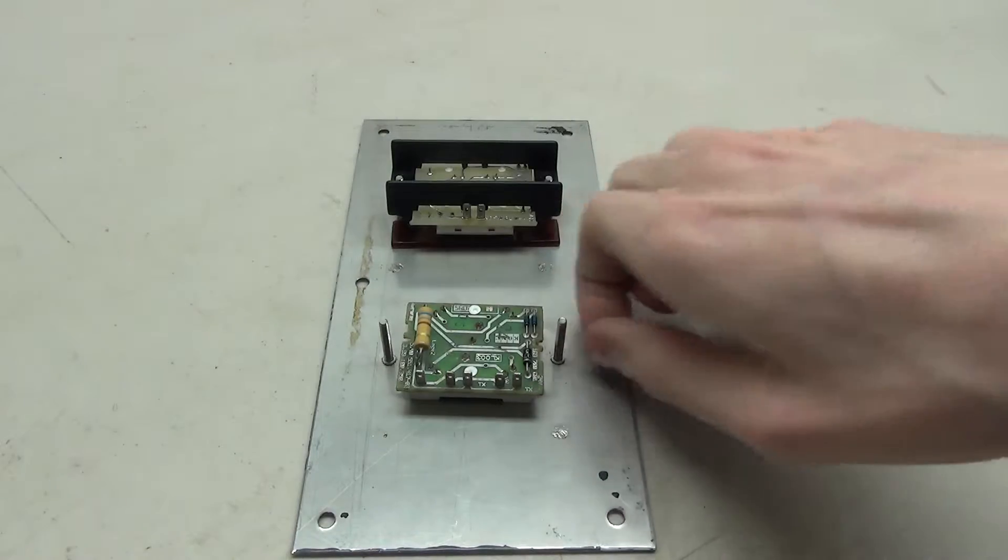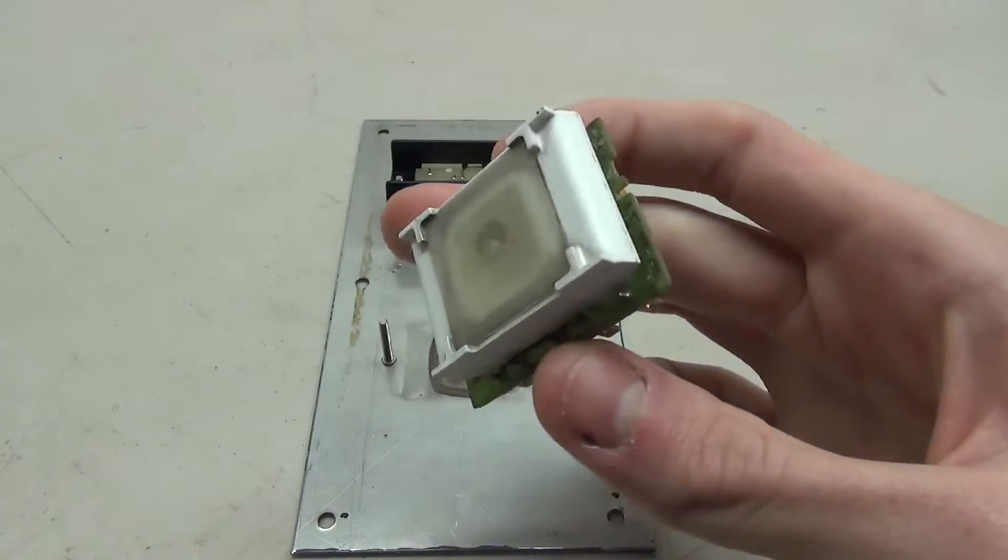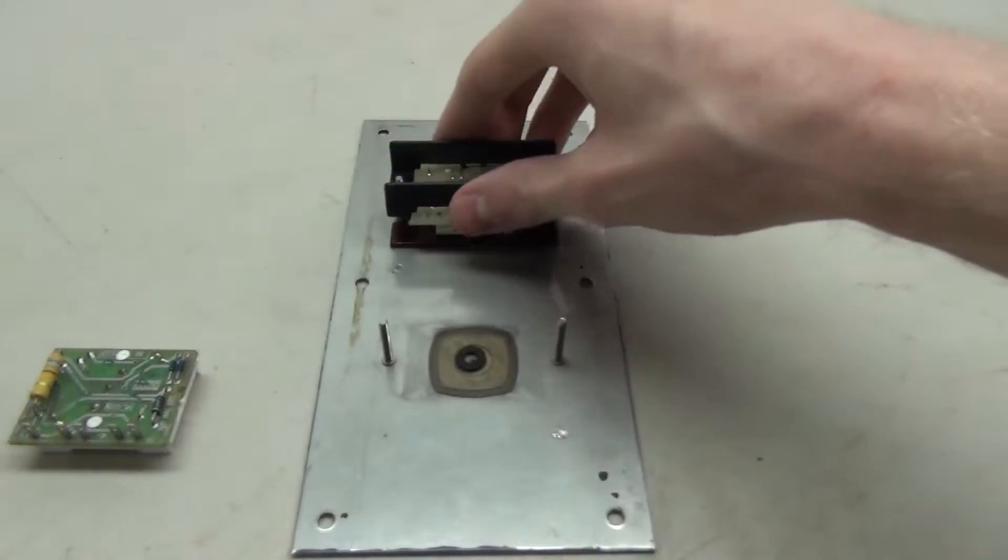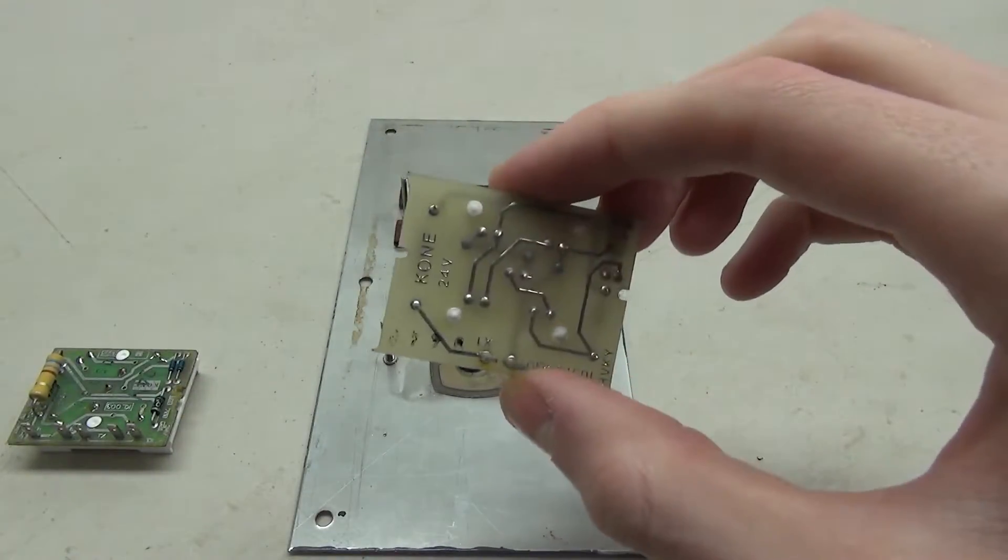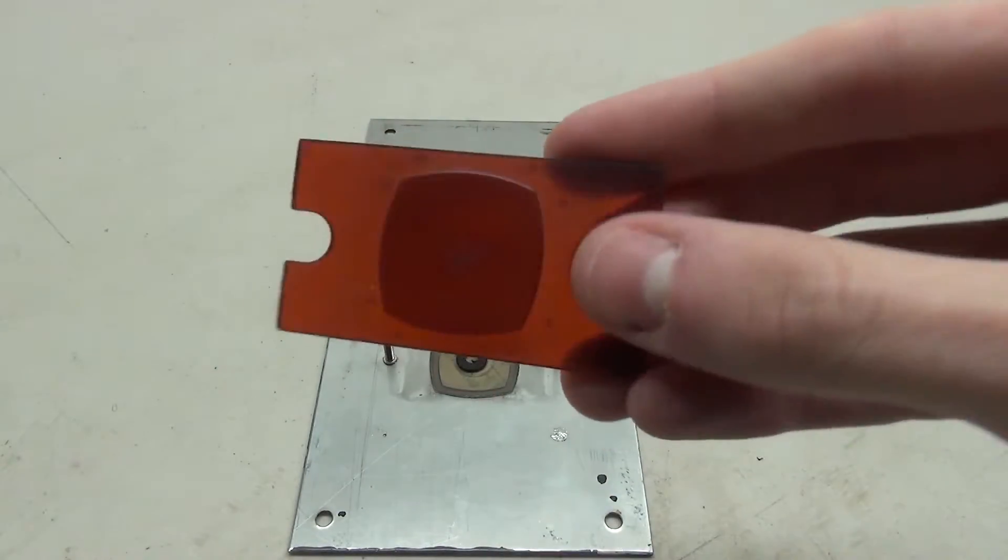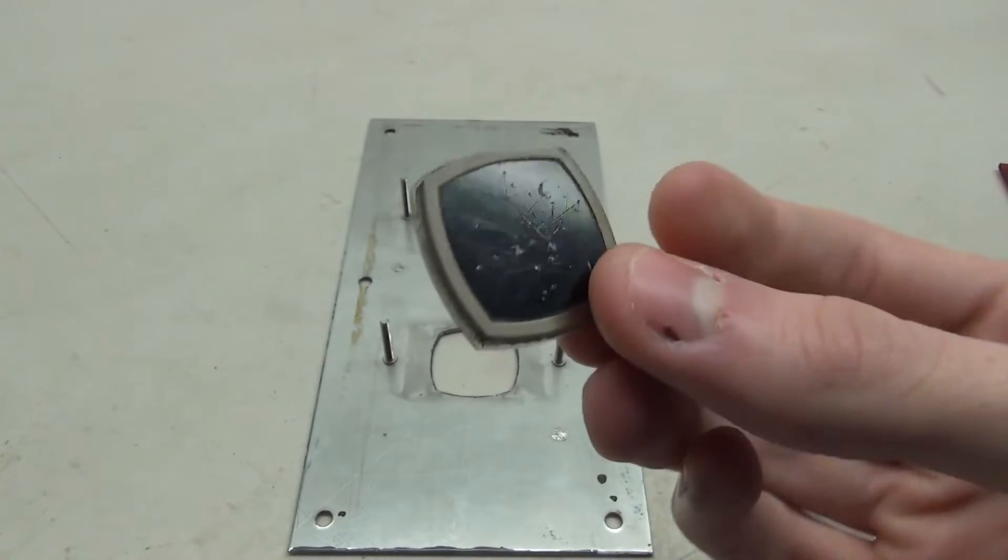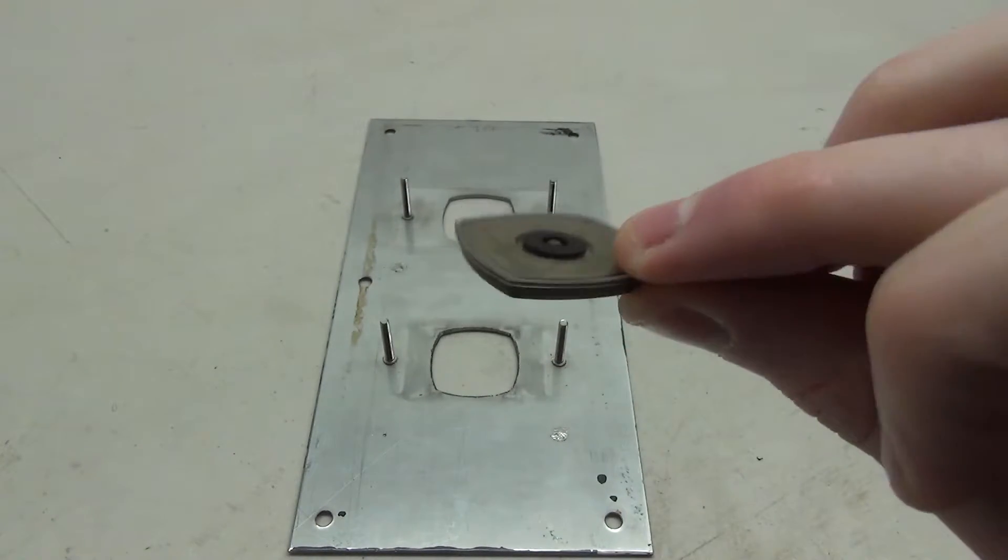There's these little washers as well. Here's what the bracket looks like. So this here is the circuit board for the call button. Let's go ahead and take the other one off, and here's the circuit board for the light. Now underneath we have the little piece for the light, the little red filter part, and then we have the button.